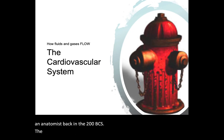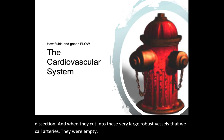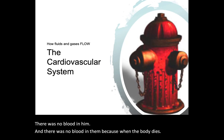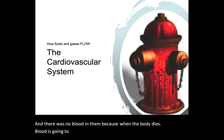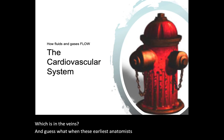The earliest anatomist would cut into the body for dissection. When they cut into these very large, robust vessels we call arteries, they were empty — there was no blood in them. Because when the body dies, blood moves to the point of lowest pressure, which is in the veins. And when these earliest anatomists cut into the veins, they found blood.